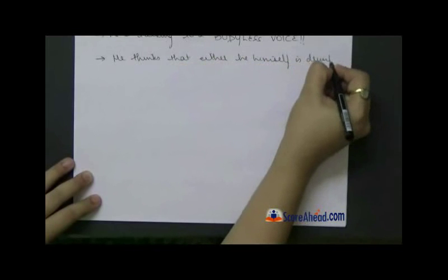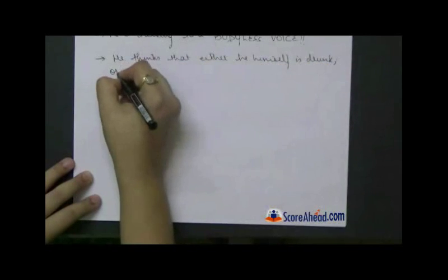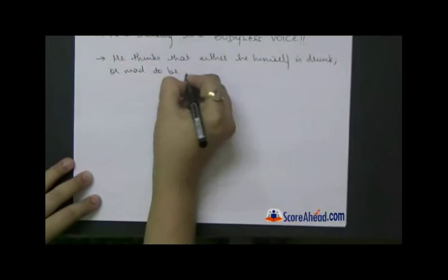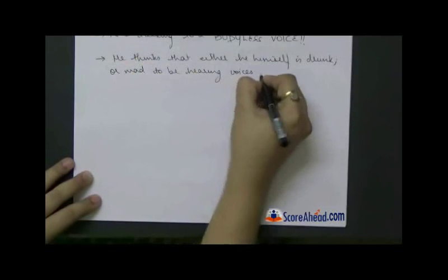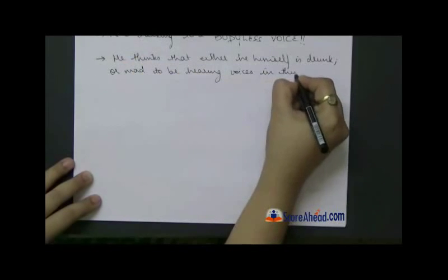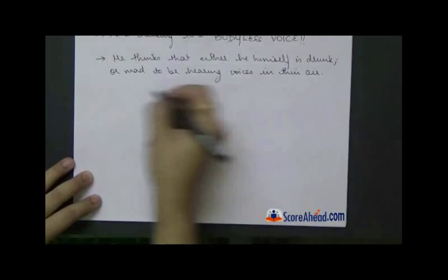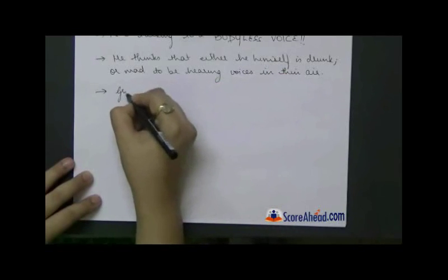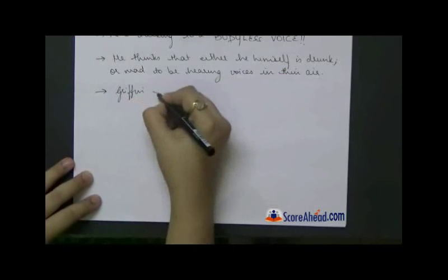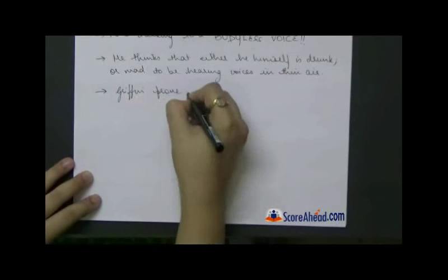He obviously does not think that there must be somebody called the invisible man. He thinks that either he himself is drunk or mad to be hearing voices in thin air. He thinks that this must be the result of some drink that he has taken, or he has probably gone mad, and Griffin tries to prove that you are not mad, you are not drunk, I'm really there.